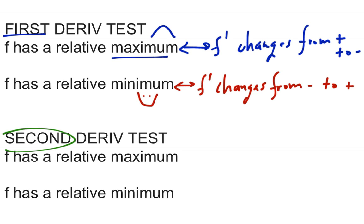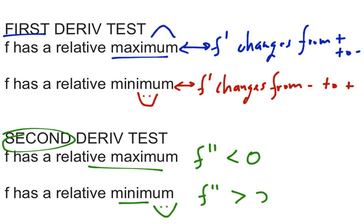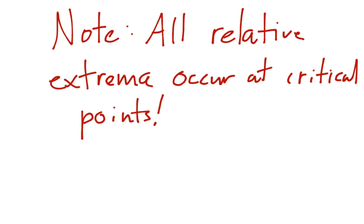For the second derivative test, we look at the second derivative. At a relative maximum, f double prime is less than zero. At a relative minimum — meaning it's concave up — f double prime is greater than zero. Also important to note: all relative extrema must occur at critical points, either where the derivative is zero or where the derivative is undefined, as in the case of y equals the absolute value of x.